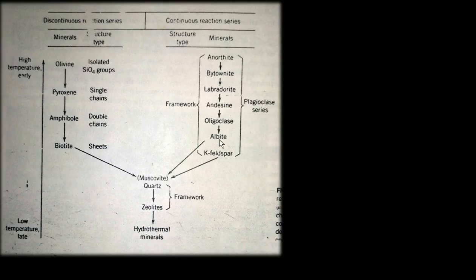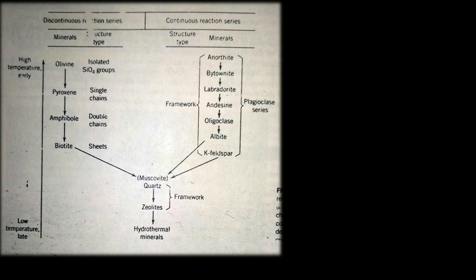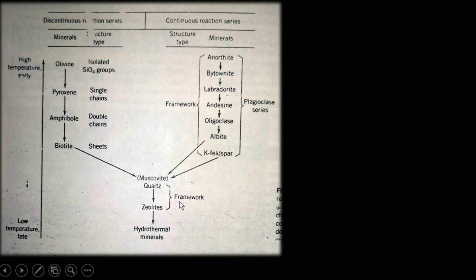In this slide, along with the mineral name, there is also a column showing the silicate structural type in which each particular mineral crystallizes. Olivine crystallizes as an isolated SiO4 group — isolated tetrahedra — also known as nesosilicate. Pyroxene is a single-chain inosilicate, followed by double-chain inosilicate. Biotite is a phyllosilicate. Plagioclase, muscovite, and quartz crystallize as framework silicates.